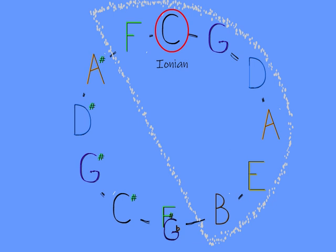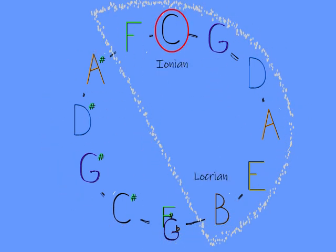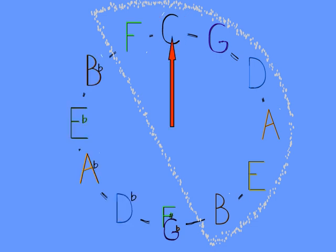And lastly is B in Locrian mode. Its five sharp notes have all been replaced with natural notes. Now let's look at it from the perspective of the note C. C in this spot is the one note, Ionian mode.